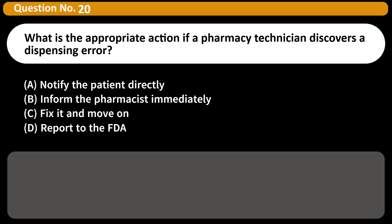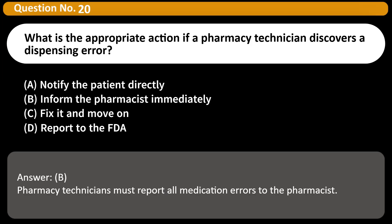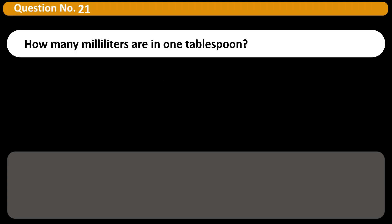What is the appropriate action if a pharmacy technician discovers a dispensing error? A. Notify the patient directly. B. Inform the pharmacist immediately. C. Fix it and move on. D. Report to the FDA. Answer: B. Pharmacy technicians must report all medication errors to the pharmacist.